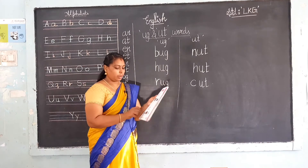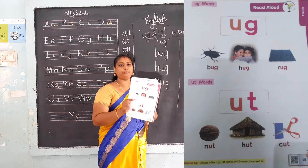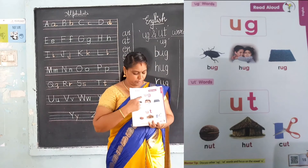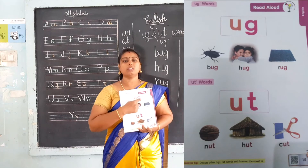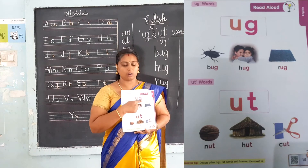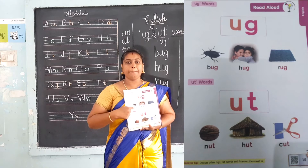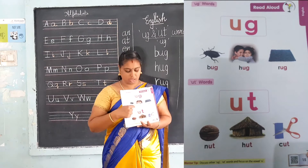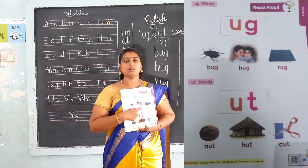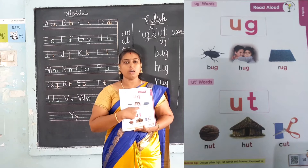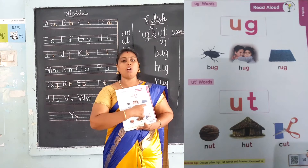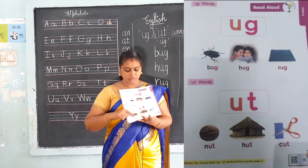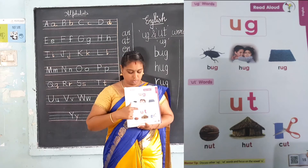Take your book, page number 15. B, U, G — bug. H, U, G — hug. R, U, G — rug.